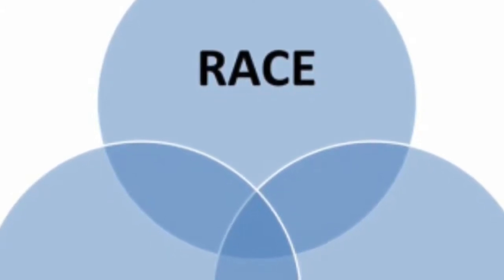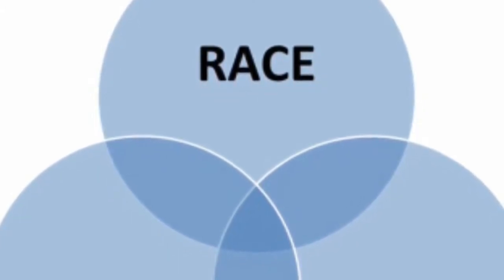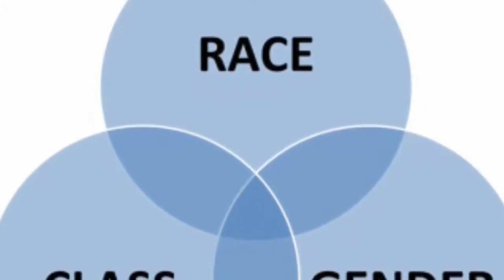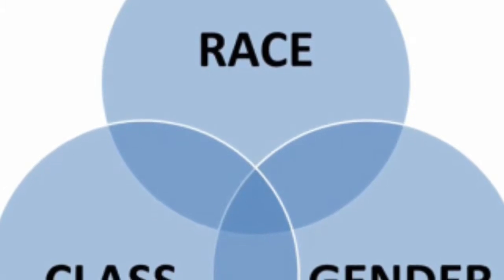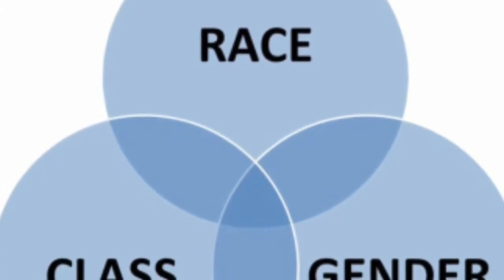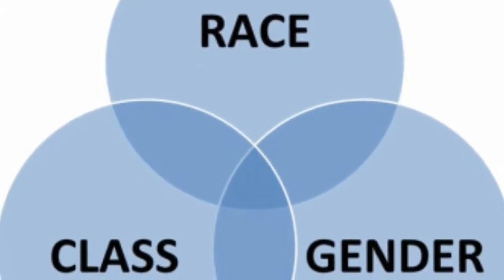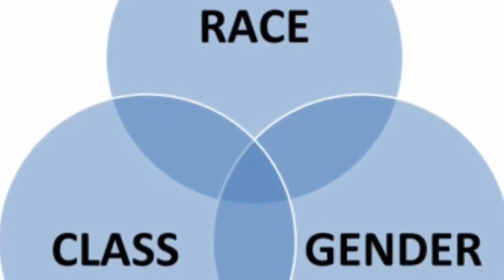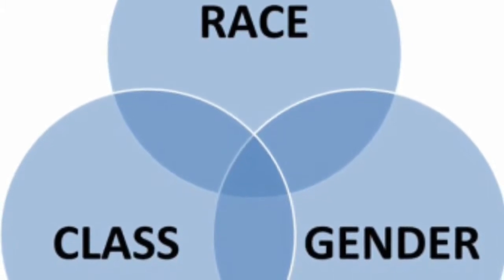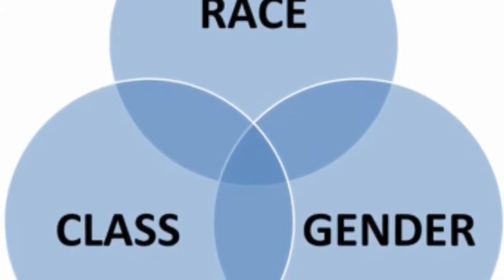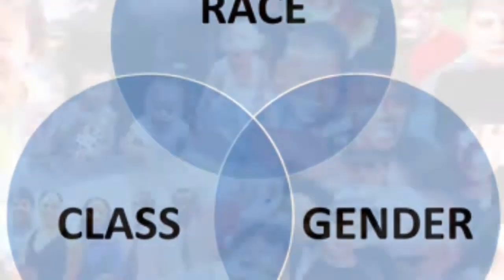Salter continues on with this by pointing out that the primary distinctions made by multiculturalism are race, class, and gender. Instead of focusing on the major distinctions between us, we should find what unites us.